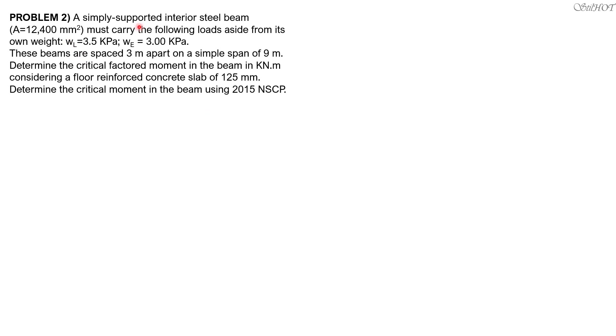The critical moment in the beam equals the highest uniform load from the load combination W times L squared over 8, where L is 9. Before that, let's compute the dead load, which consists of the weight of the simply supported steel beam, plus the uniform weight of the slab, which is specific weight of concrete times 0.125 times the spacing. So W dead load is 2.4 times 9.81 times 0.125 times 3, plus 7.86 times 9.81 times 12,400 divided by 1,000 squared, so 9.785 kilonewtons per meter. W live load is 3.5 times 3, so 10.5 kilonewtons per meter. W earthquake load is 3 times 3, so 9 kilonewtons per meter.